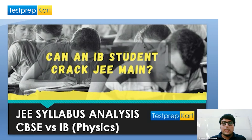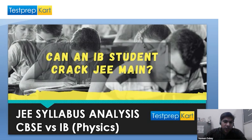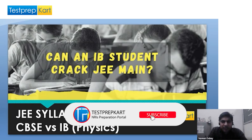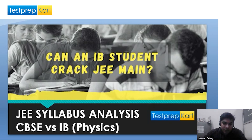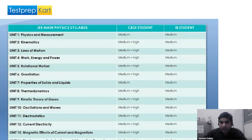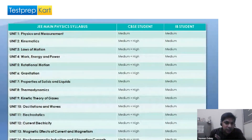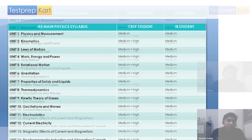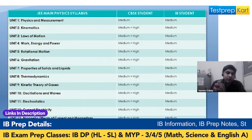In this video we'll be analyzing and comparing the syllabus of JEE Main physics for an IB student and a CBSE student. We're going to look at the physics syllabus content for JEE Mains and compare it for IB students. In this presentation there is a list of topics and we try to do a comparative analysis on the basis of difficulty level of questions in JEE Mains and IB physics.